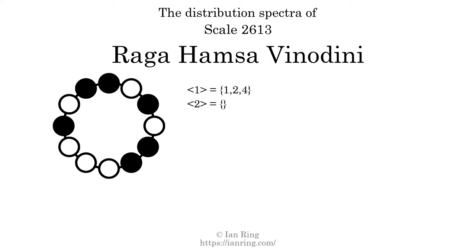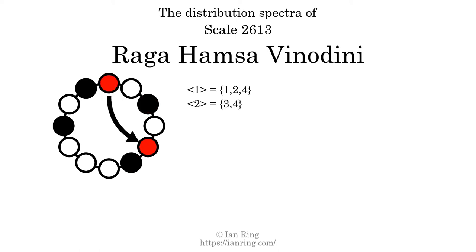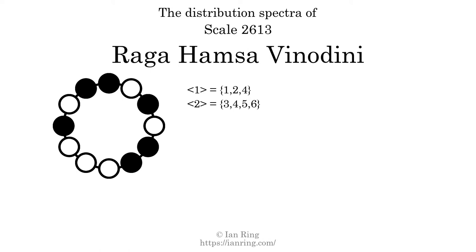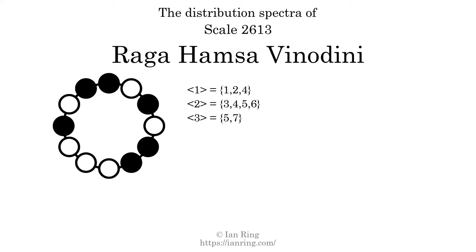The generic interval of two scale steps comes in four different specific interval sizes: 3 semitones, 4 semitones, 5 semitones, and 6 semitones. The spectrum width of this generic interval is 3. The generic interval of five scale steps comes in two different specific interval sizes: 5 semitones and 7 semitones. The spectrum width of this generic interval is 2.